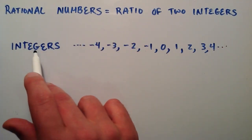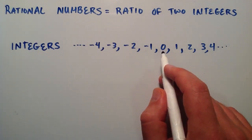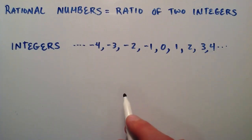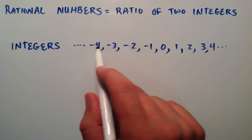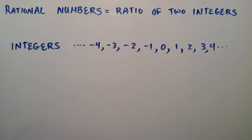Remember from lesson one, an integer is all the numbers counting by ones starting at zero and counting up one, two, three, four, five, as far as you want to go in the positive direction, and starting at zero counting down negative one, negative two, negative three, negative four, as far as you want to go counting by ones in the negative direction. All of those numbers are the integers.